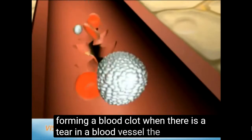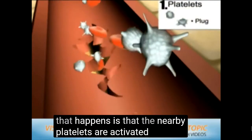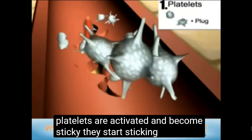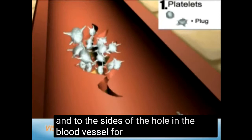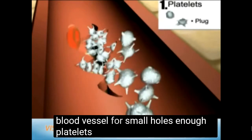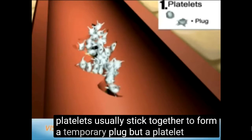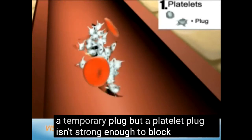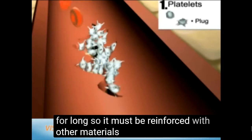When there is a tear in a blood vessel, the first thing that happens is that the nearby platelets are activated and become sticky. They start sticking to each other and to the sides of the hole in the blood vessel. For small holes, enough platelets usually stick together to form a temporary plug. But a platelet plug isn't strong enough to block the opening for long, so it must be reinforced with other materials.